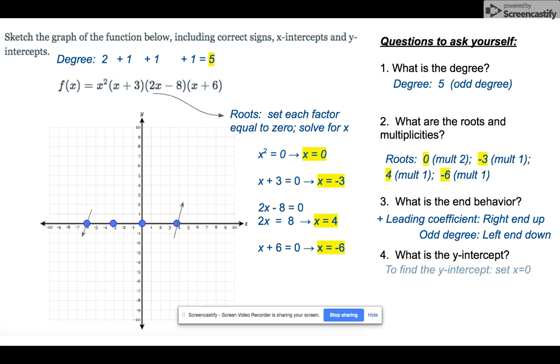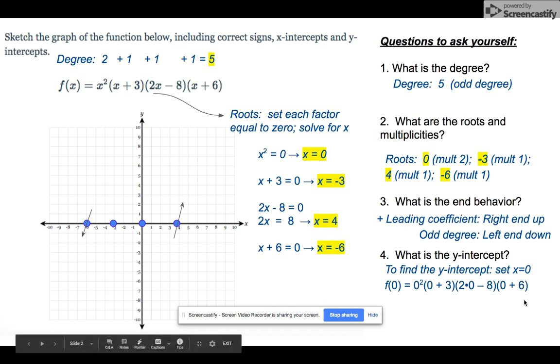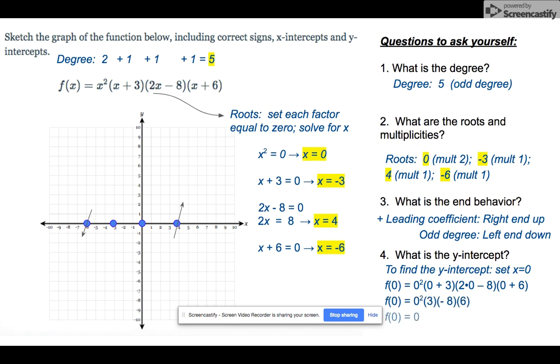And the y-intercept, we're going to set x equal to 0 in the original equation. And everywhere I see an x, I'm going to substitute 0. A lot of times you will get a number other than 0, and you will have to plot that on your y-axis. But in this case, 0 times anything will always be 0, so my y-intercept is 0.